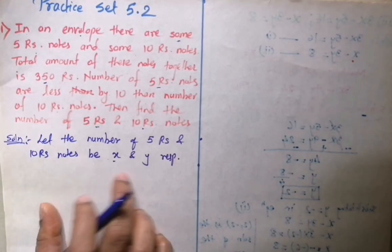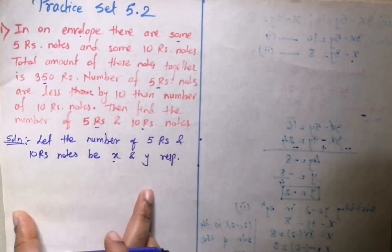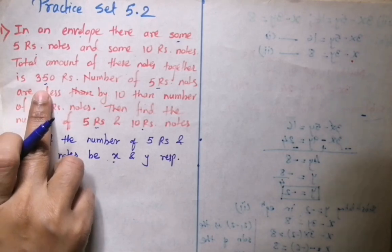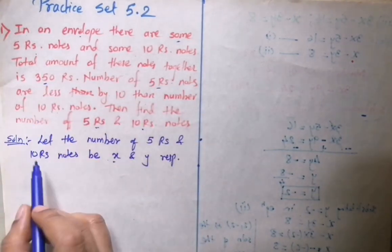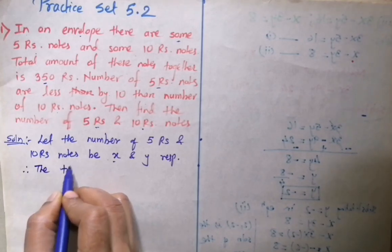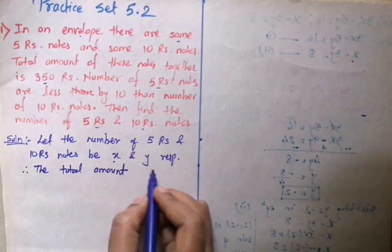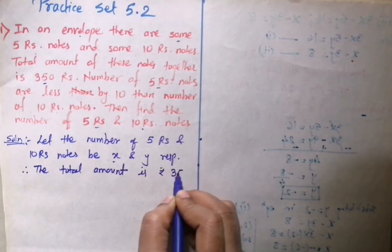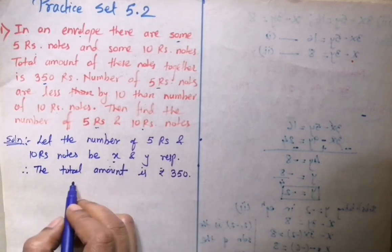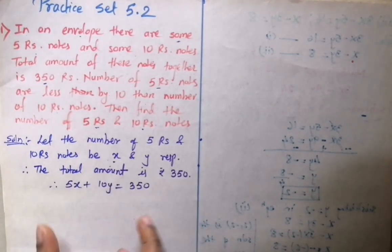The total amount of these notes is ₹350, so we just add them. Therefore the total amount equals ₹350. So 5x plus 10y equals 350. This is one equation.